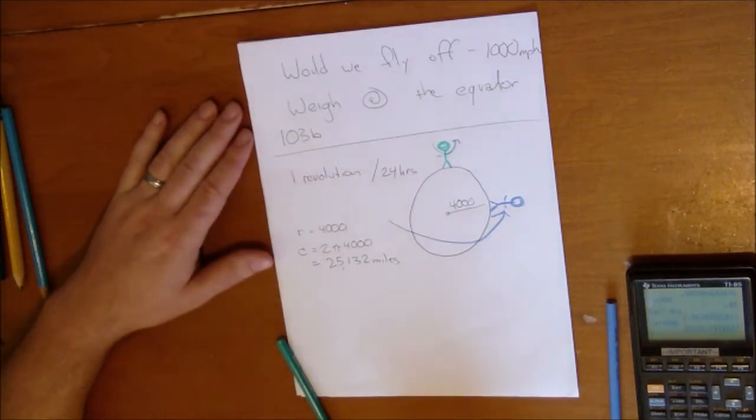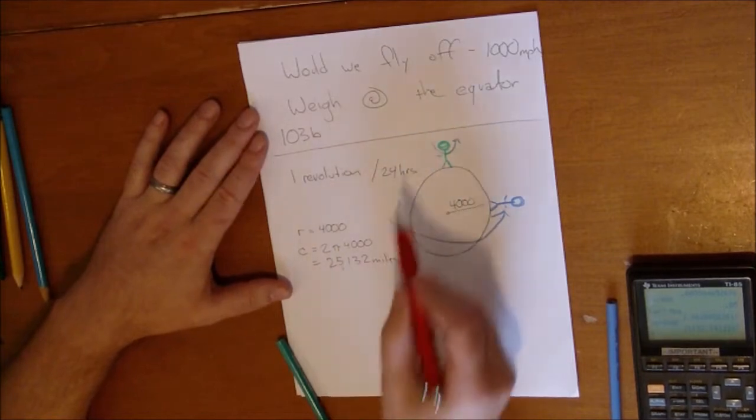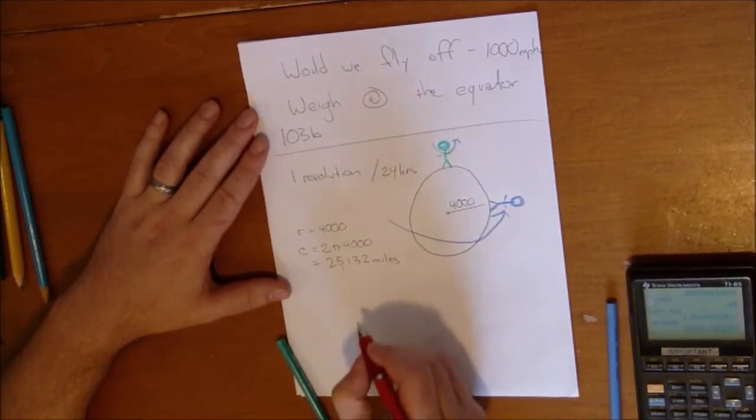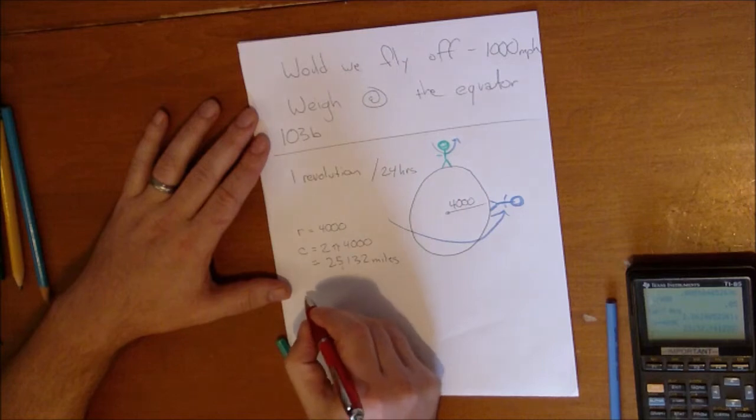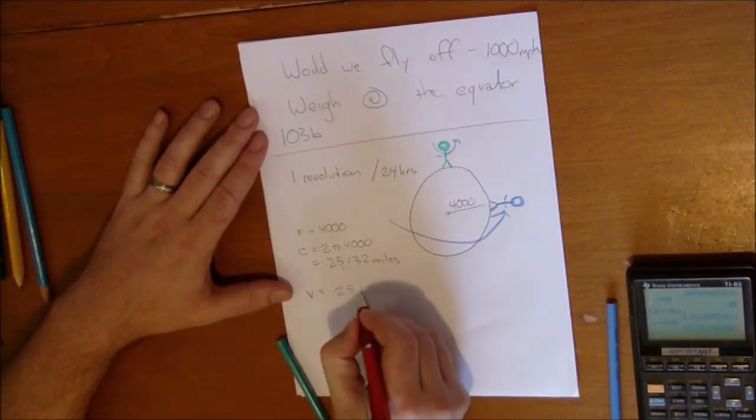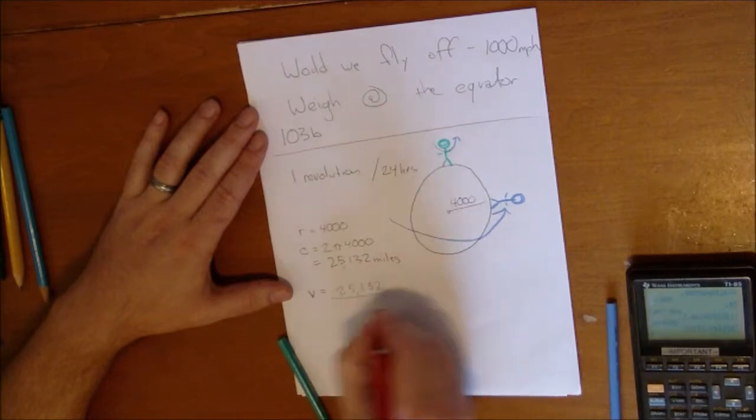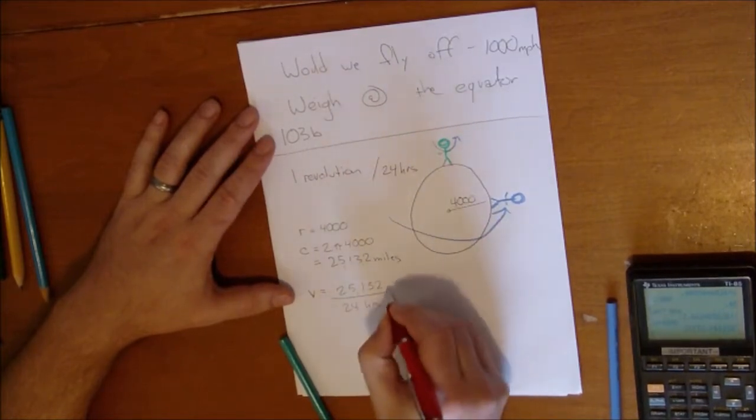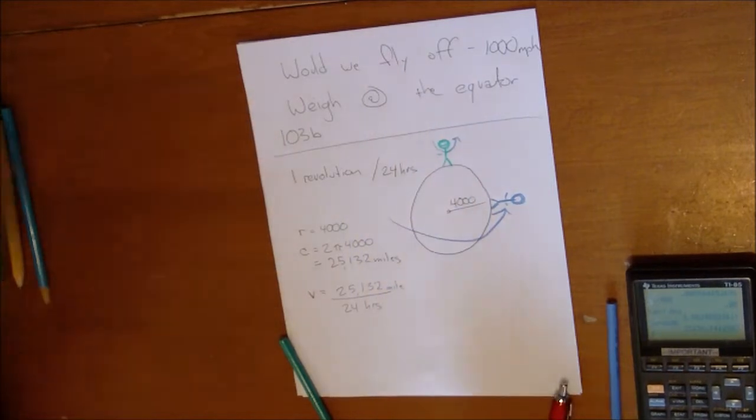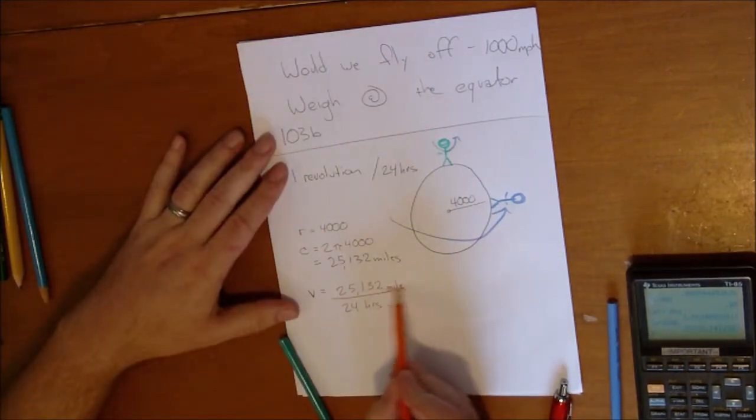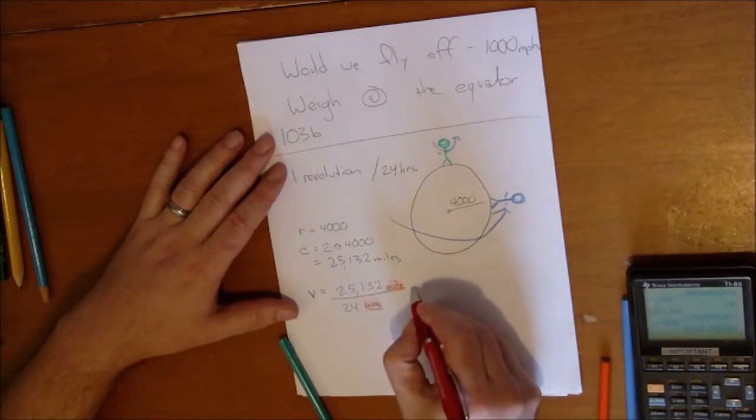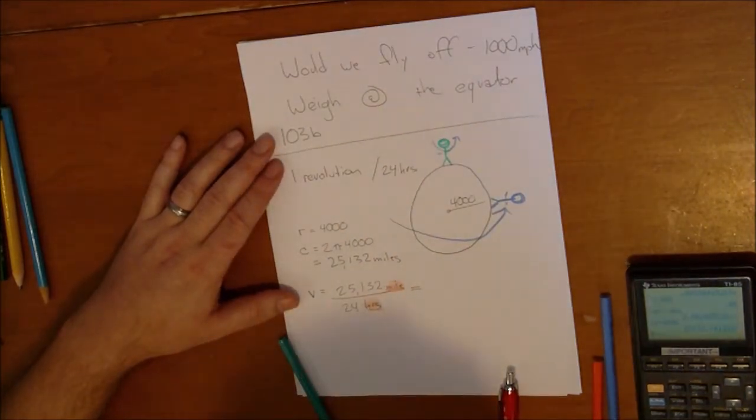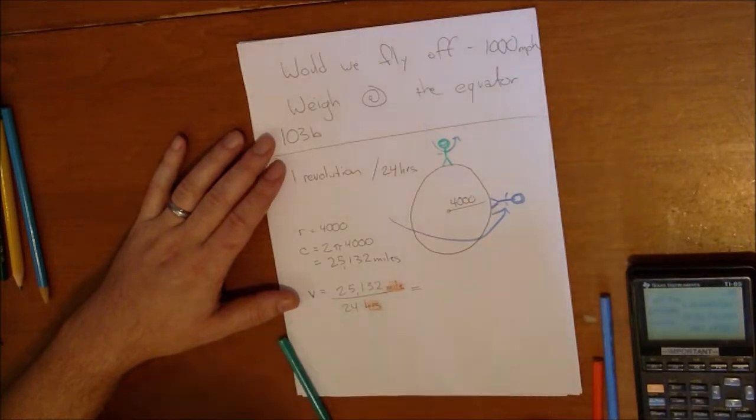So first, we have miles and we have hours. One revolution is equal to 25,132. So then the velocity, we can say, is 25,132 divided by 24 hours. And our units are going to match properly. We're going to have miles upstairs, hours downstairs, which makes it per hour. So I'm going to divide this by 24, and we get 1047.